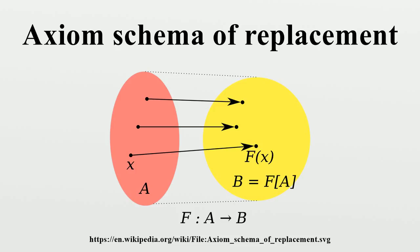The axiom schema is sometimes stated without prior restrictions on the predicate. In this case, there may be elements X in A that are not associated to any other sets by phi. However, the axiom schema as stated requires that if an element X of A is associated with at least one set Y, then the image set B will contain at least one such Y. The resulting axiom schema is also called the axiom schema of boundedness. The axiom schema of collection is equivalent to the axiom schema of replacement over the remainder of the ZF axioms. However, this is not so in the absence of the power set axiom or the constructive counterpart of ZF, where collection is stronger.